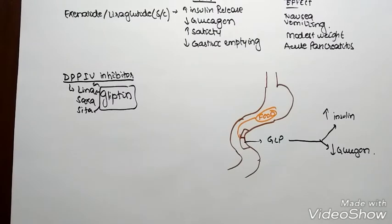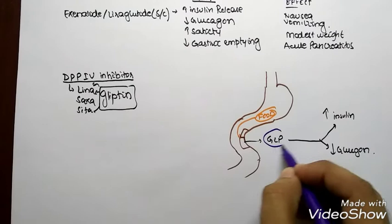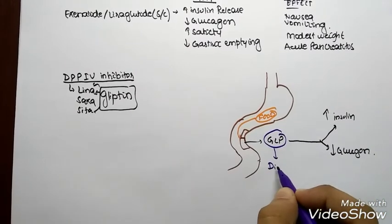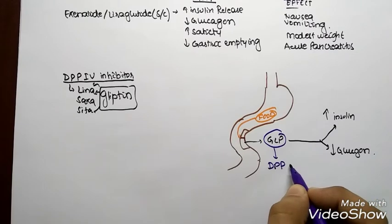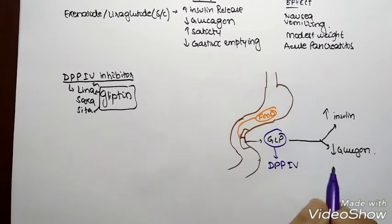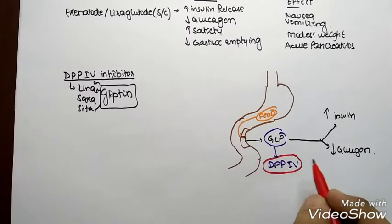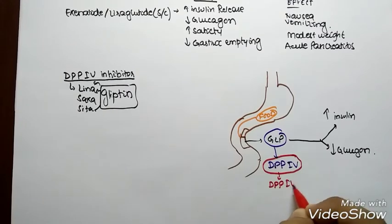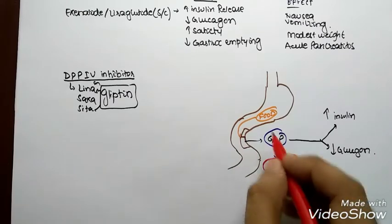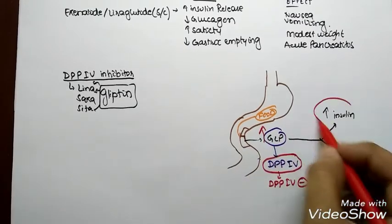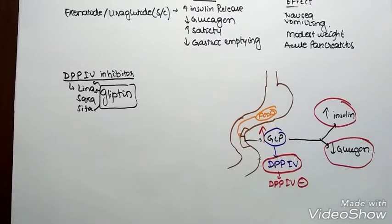This GLP is inhibited by the enzyme dipeptide peptidase 4. So if we inhibit this enzyme, we are increasing the GLP action. If I give the drug DPP4 inhibitor, I am increasing GLP, increasing insulin release, and decreasing glucagon.